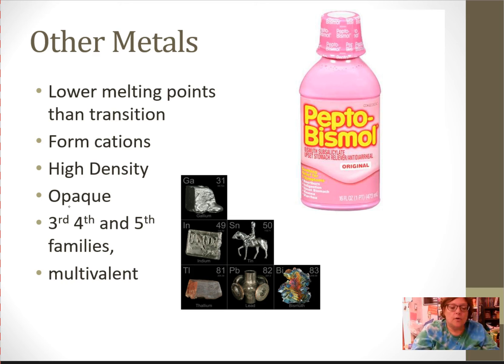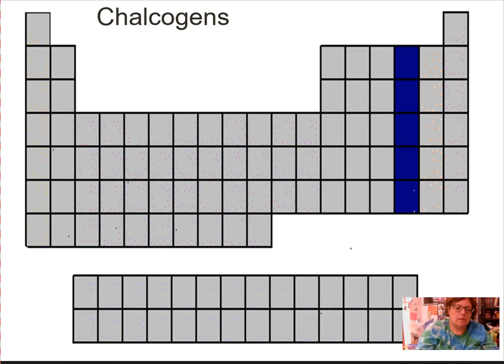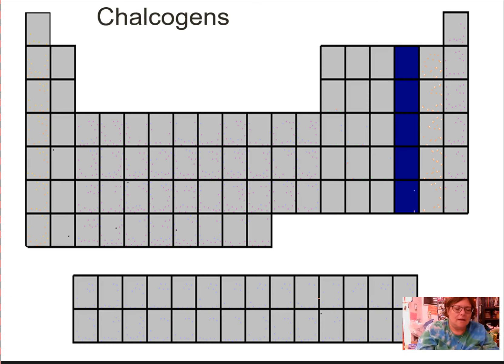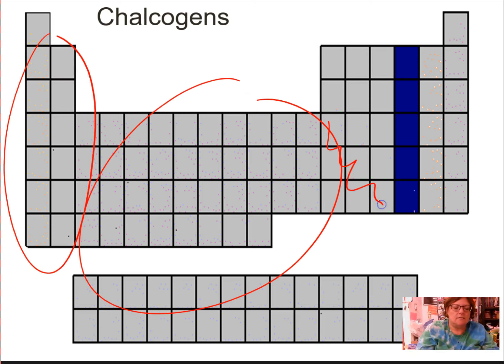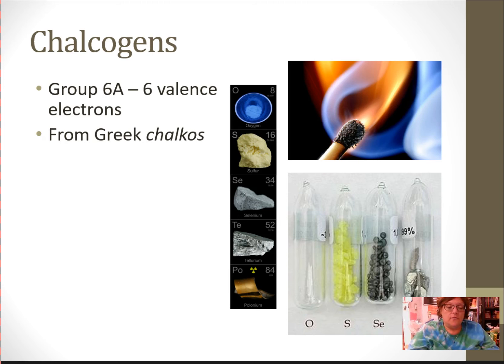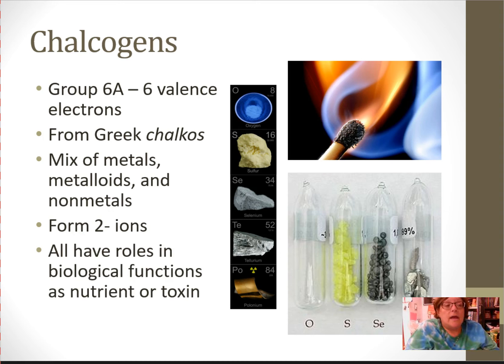The next column we're going to look at. We've looked at this area. That was the poor metals. And we've looked at this area and this area. So now we're going to go on to the right. And we're going to be looking at the third column from the end. This is the chalcogen family. Group 6A. They have six valence electrons. They come from the Greek word chalcos. They are a mix of metals at the bottom, metalloids in the middle, nonmetals at the top. They form negative two ions. And they all have roles in biological functions, either as a nutrient or a toxin. You can see oxygen, sulfur, selenium, and tellurium in the picture.